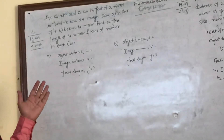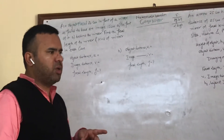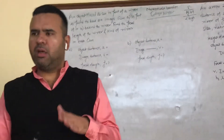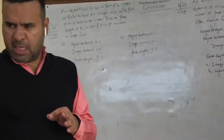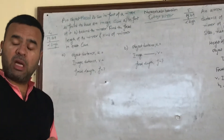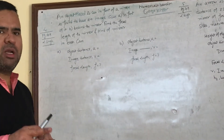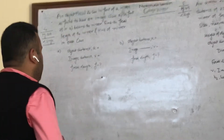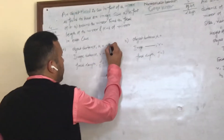The object distance and image distance are given. In part A, the image is made in front of the mirror — if the image is in front, it will be a concave mirror because it will be a real and inverted image. If the image is behind the mirror, it will be a convex mirror. Also, if the object is between the pole and focus, it will be virtual, erect, and magnified. Convex mirror will always give a virtual, erect, and diminished image.